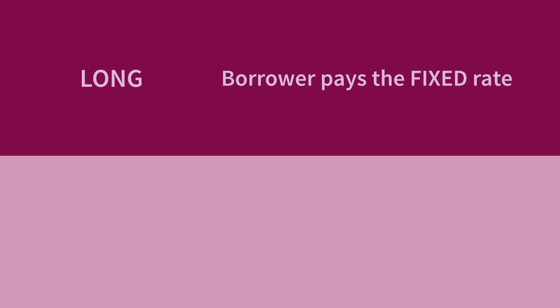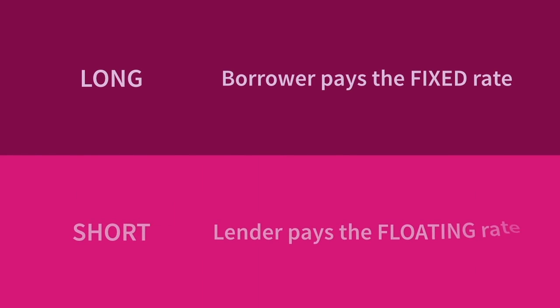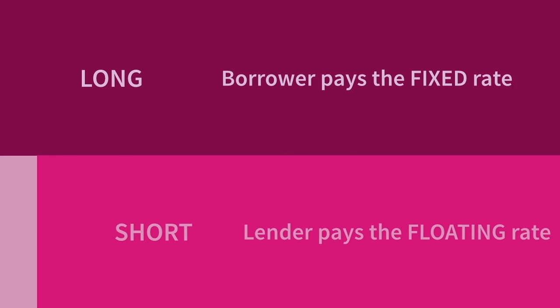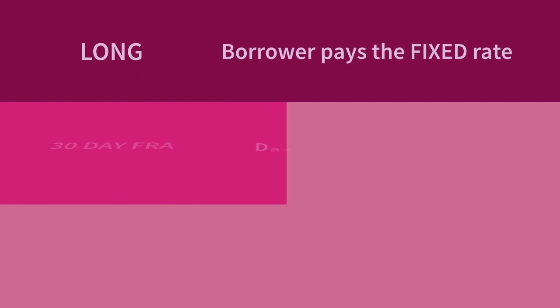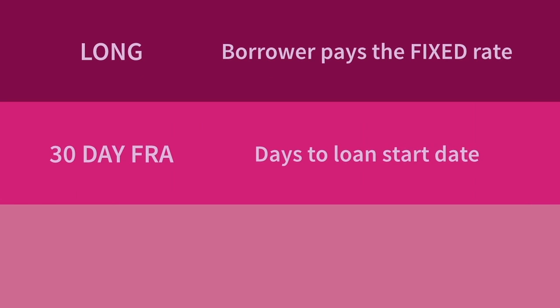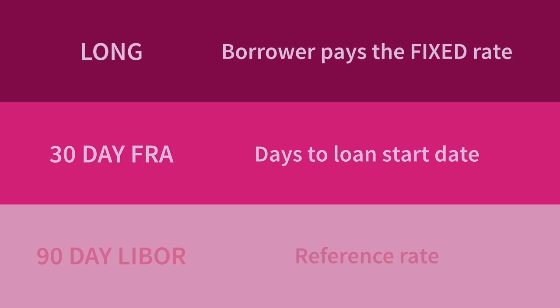In this case we are the long party, also referred to as the borrower, meaning that we pay the fixed rate amount. The short party would be referred to as the lender, and they pay the floating rate amount. A 30-day FRA means that the term of the hypothetical loan upon which the cash flows of this FRA are based is intended to start in 30 days. And 90-day LIBOR means that we are basing the floating rate side of this FRA on 90-day LIBOR.